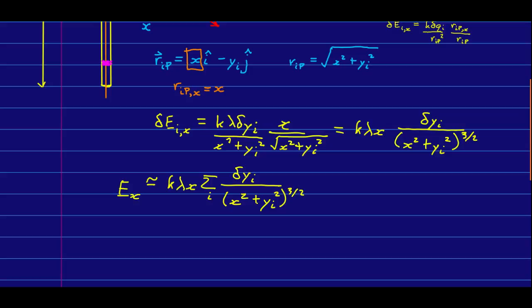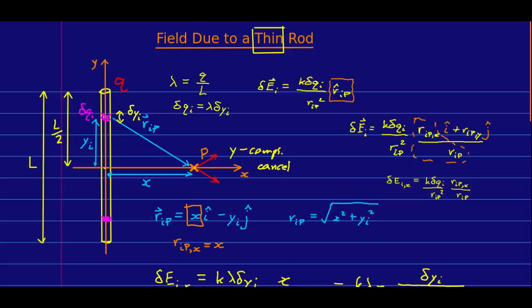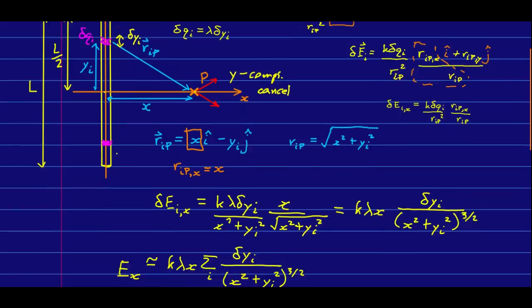Except that we'll never actually carry out that sum because we want the exact answer. And so, we're going to convert it to an integral. So, we're taking the limit as our delta y_i's go to zero. In other words, as we're taking tinier and tinier little thin pieces of the rod.